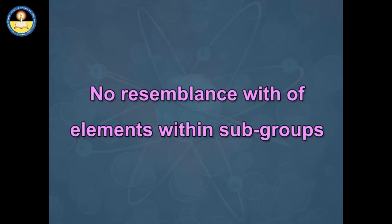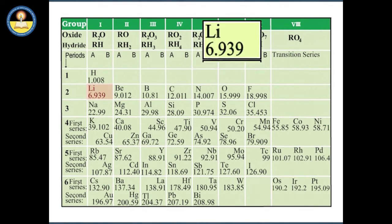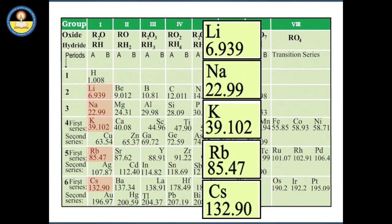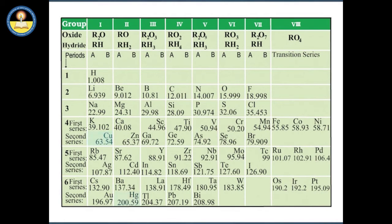No resemblance with elements within subgroups: In Mendeleev's periodic table, elements placed in a group have similar chemical properties, but there is no similarity in properties of elements in the two subgroups of a particular group. For example, lithium, sodium, potassium, rubidium, and cesium present in group 1A are quite different from the coinage metals such as copper, silver, and gold present in group 1B. Different groups for similar elements: In some cases, elements with similar properties have been placed in different groups. For example, both copper and mercury have similar properties, but copper has been placed in group 1B while mercury has been placed in group 2B.